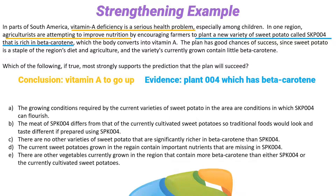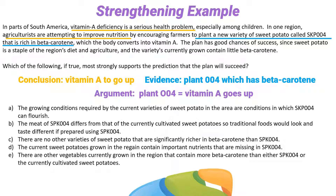Now we're being asked to strengthen the argument, so we're looking for reasons why planting the 004 will in fact be successful in increasing vitamin A. Answer choice A is looking pretty good — it's saying that 004 can in fact grow in the area we want to grow it in. That would be a reason why this plan might just work.